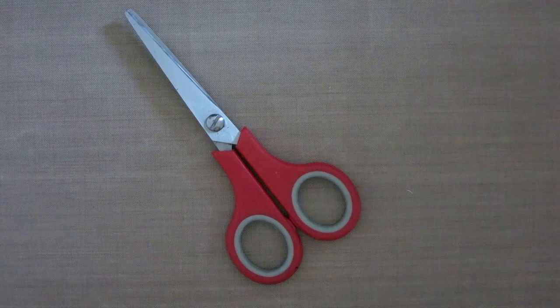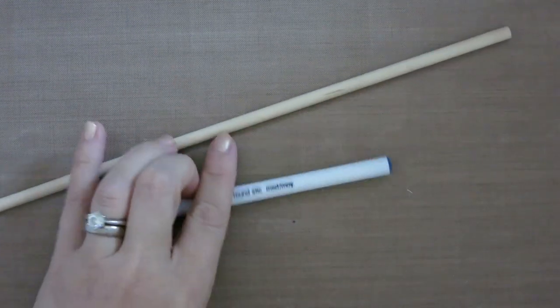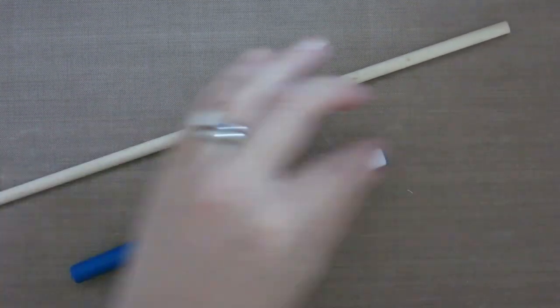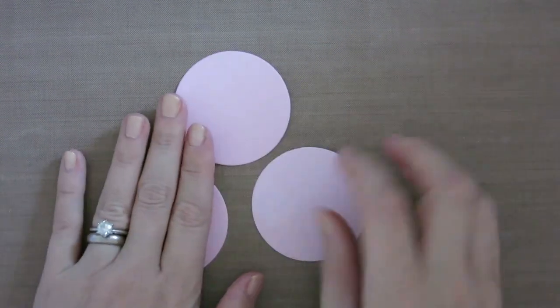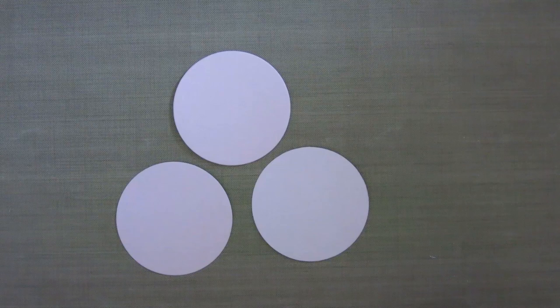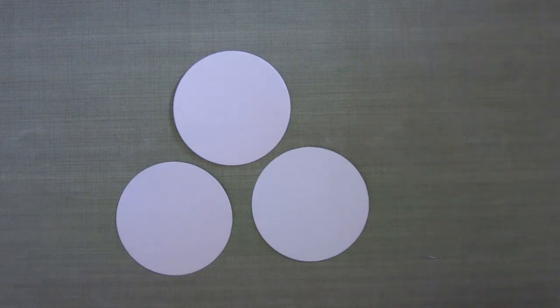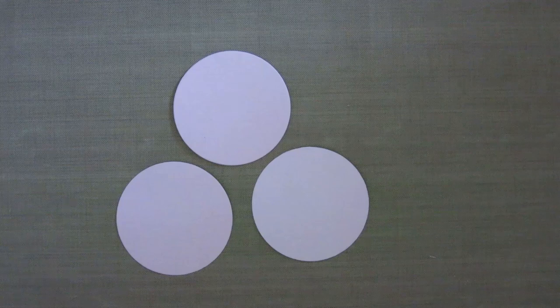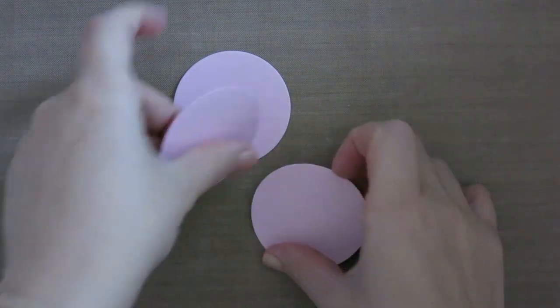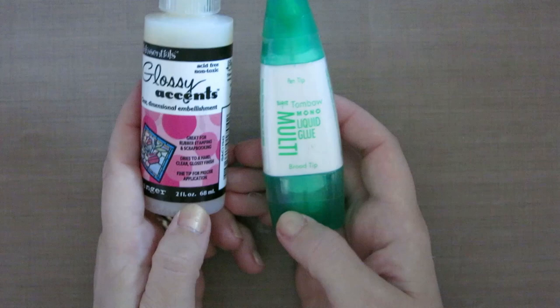All you need is a pair of scissors, a dowel or a pen or something with a small circumference to wrap the petals around, three cardstock circles. I use the Sizzix circle die but you could use even the cap to a hairspray container, whatever you've got around. You'll need three identical circles and then a liquid adhesive of some sort.